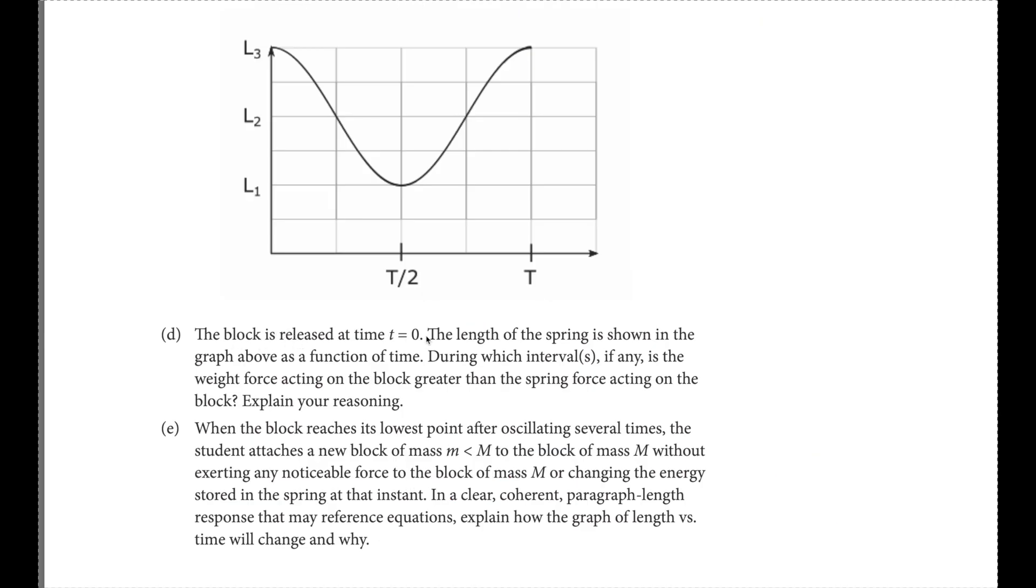So let's get to part D. The block is released at time zero. The length of the spring is shown in the graph above as a function of time during which intervals, if any, is the weight force acting on the block greater than the spring force acting on the block and explain your reasoning. So it looks like this is L3. So if I draw those springs again, that was L1. This was L2. And this was L3. So essentially, we're starting here when the block is right there. Then what happens is it accelerates towards this is going to be the equilibrium point. And this would be what T over four. And this would be three T over four. So that's where the equilibrium system of this is. But the equilibrium of the spring is way up here at L1.